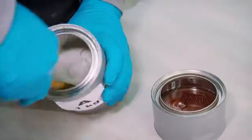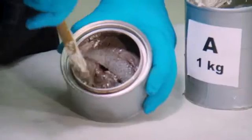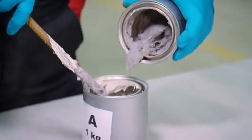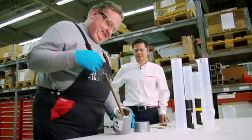First, we pre-mix both components separately. Afterwards, we bring component B to component A and mix again for three to five minutes until we reach a consistent mortar.